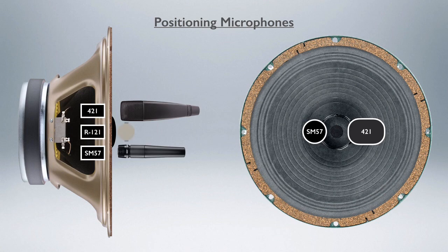And then if we were to add a ribbon mic, the R121 by Royer, I would place that right down the middle. That can afford to be right in the brightest part because that doesn't seem to be as harsh when you get right in the middle of the speaker as some of the other mics.